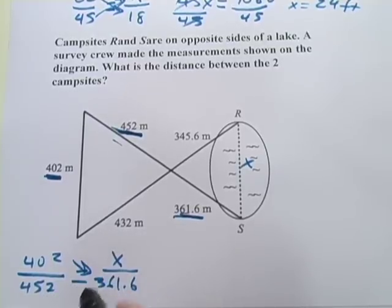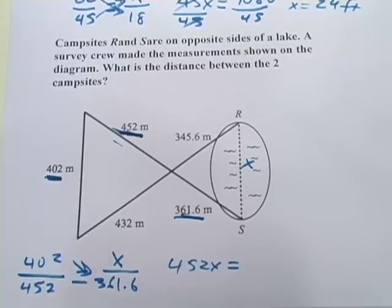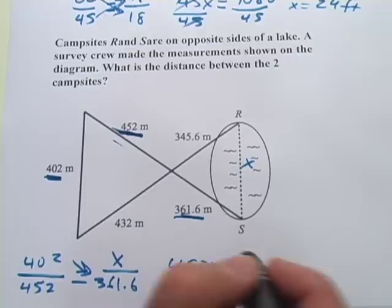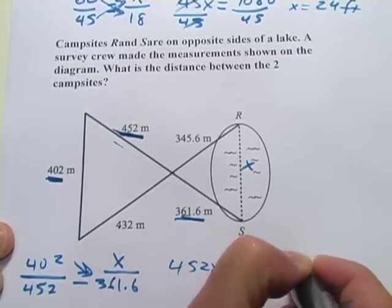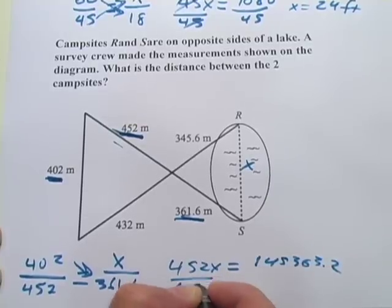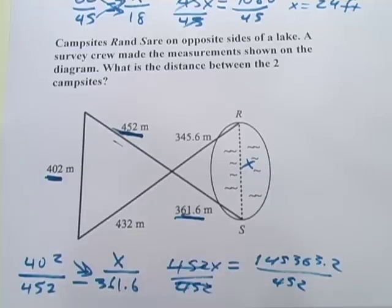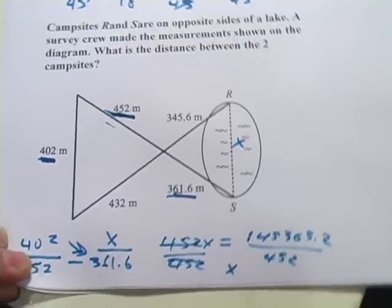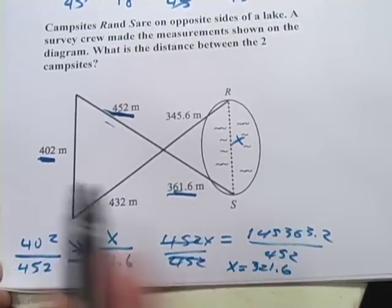I'm going to need my calculator for this one. So it's 452x equals 402 times 361.6, and that is 145,363.2. And then, of course, we divide that by 452, and we get x is 321.6, and this is meters.